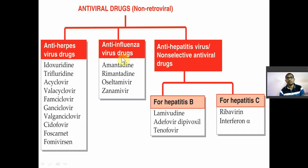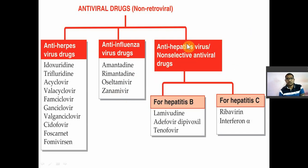The second class is anti-influenza virus drugs. There are only four drugs: Amantadine, Rimantadine, Oseltamivir, and Zanamivir. The third class is anti-hepatitis virus drugs or non-selective antiviral drugs. For hepatitis B virus: Lamivudine, Adefovir, and Tenofovir. For hepatitis C: Ribavirin and Interferon.